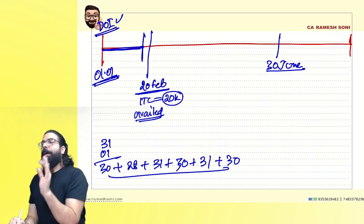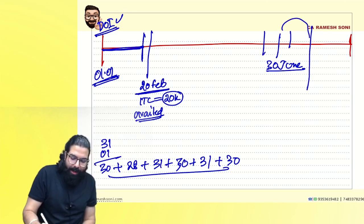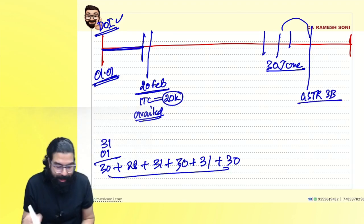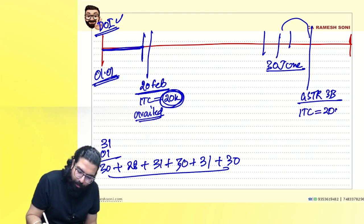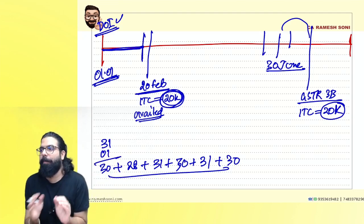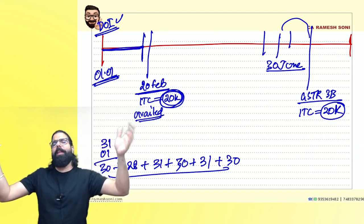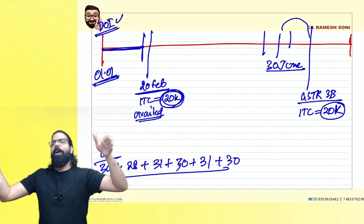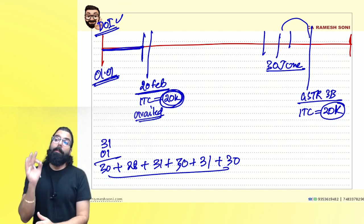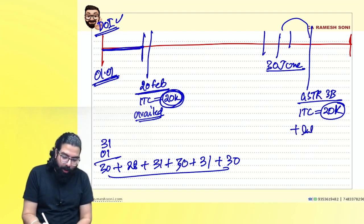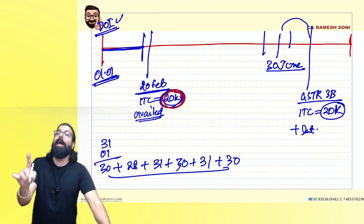180 days from 1st January: January has 30 remaining days, then February, March, April, May, June — 180 days gets over on 30th June. If you don't make payment to the supplier within 180 days, when you file the GSTR-3B after the month in which 180 days expires, you must reverse the ₹20,000 ITC — pay it back to the government.